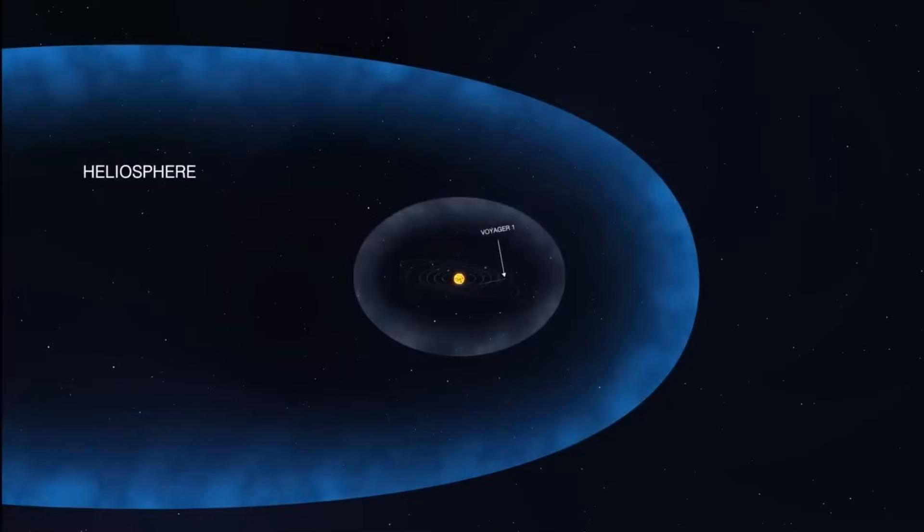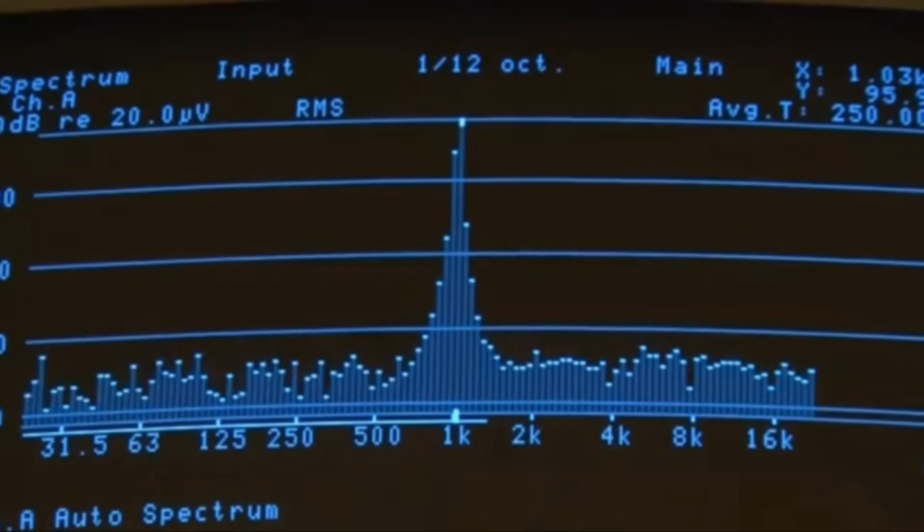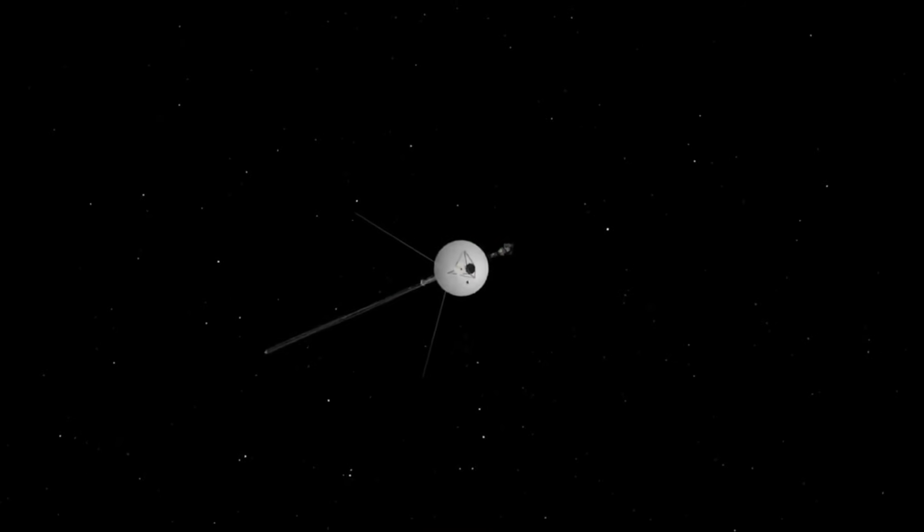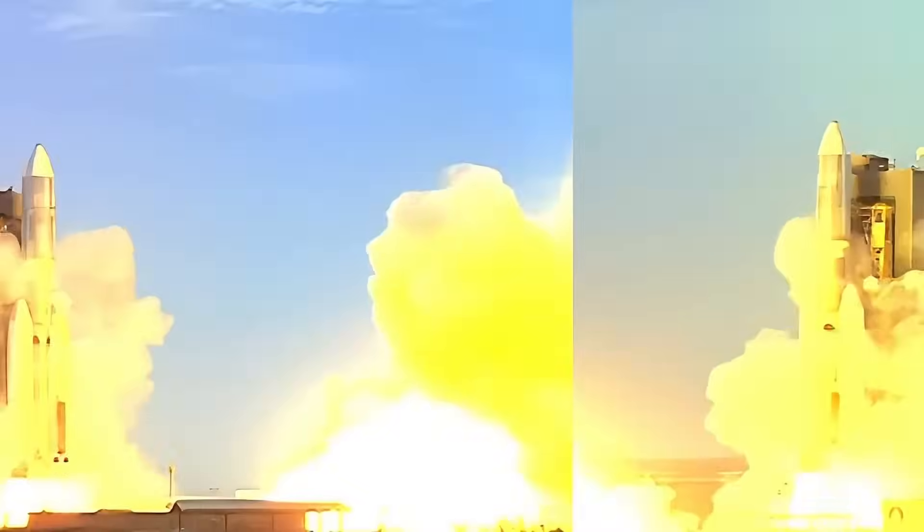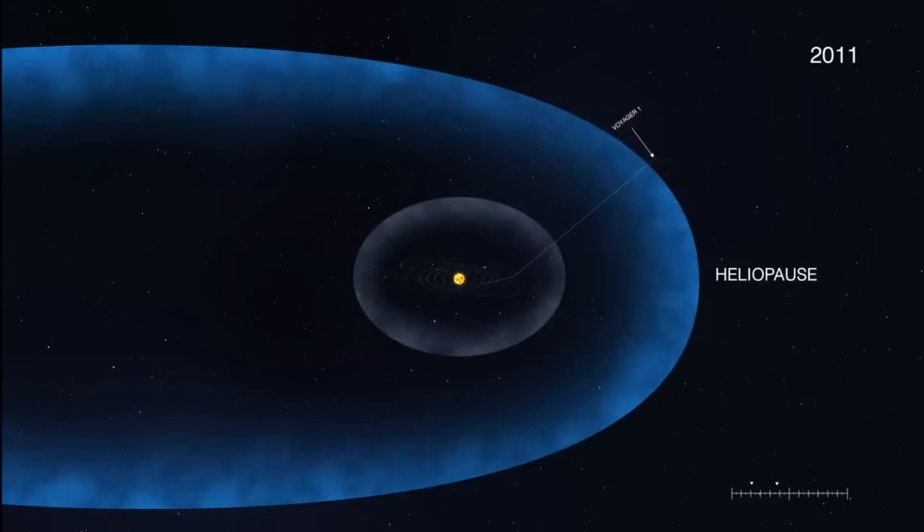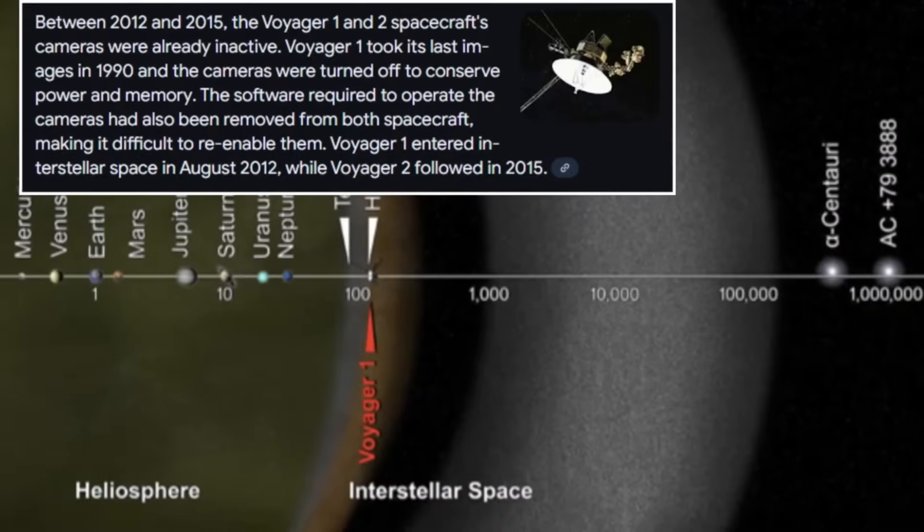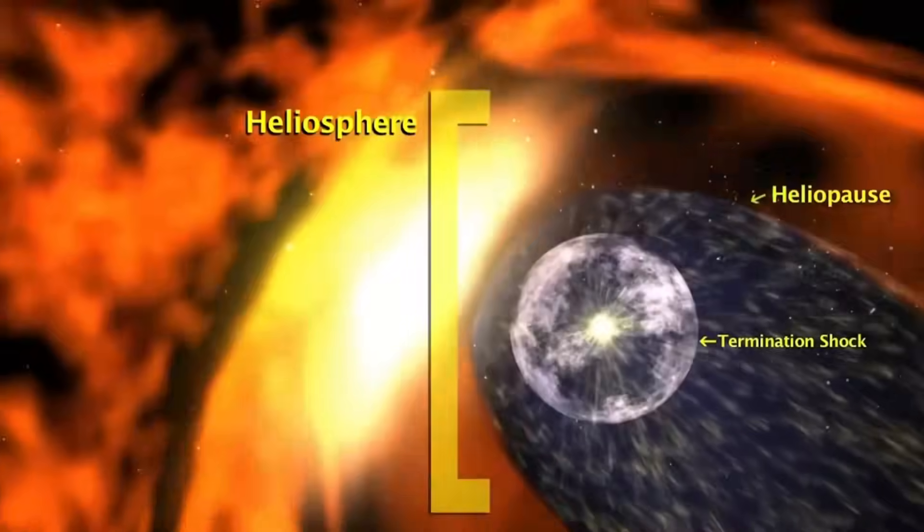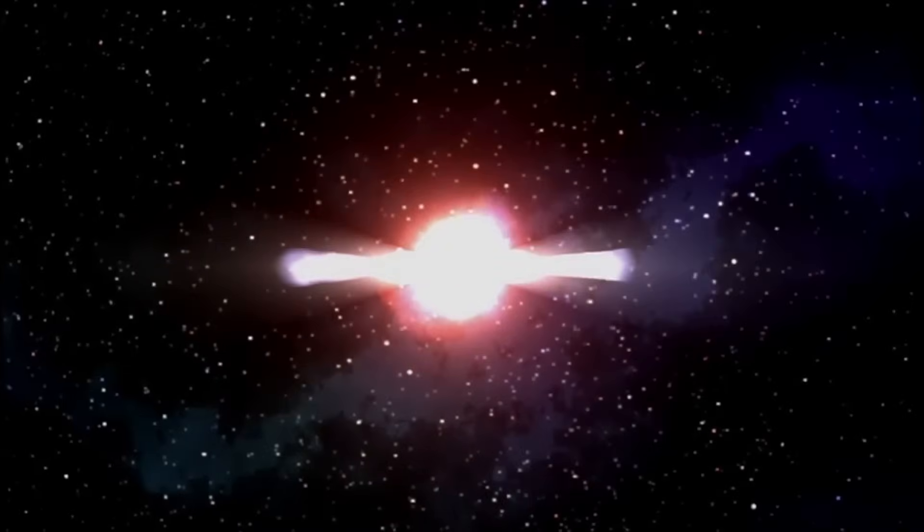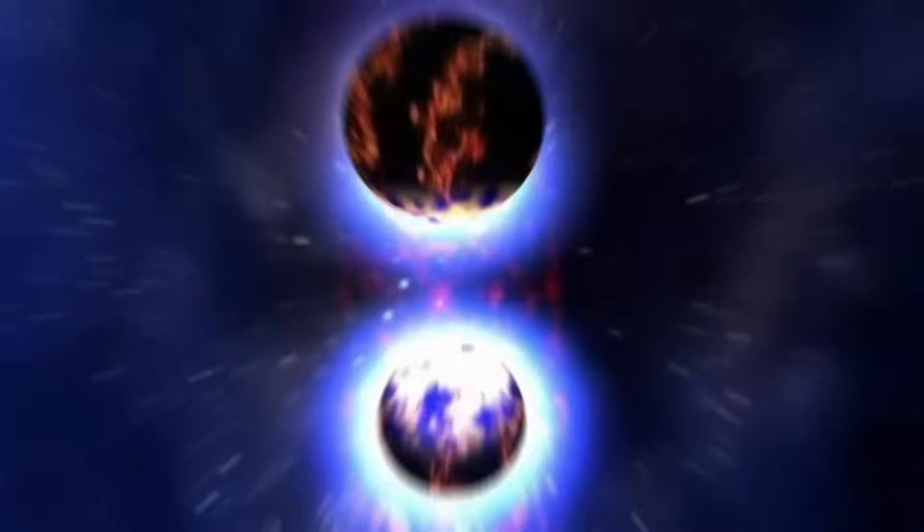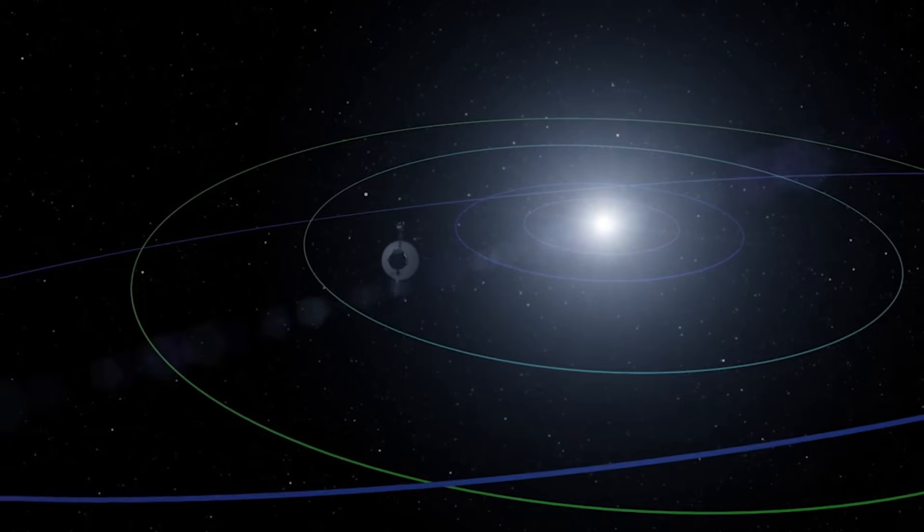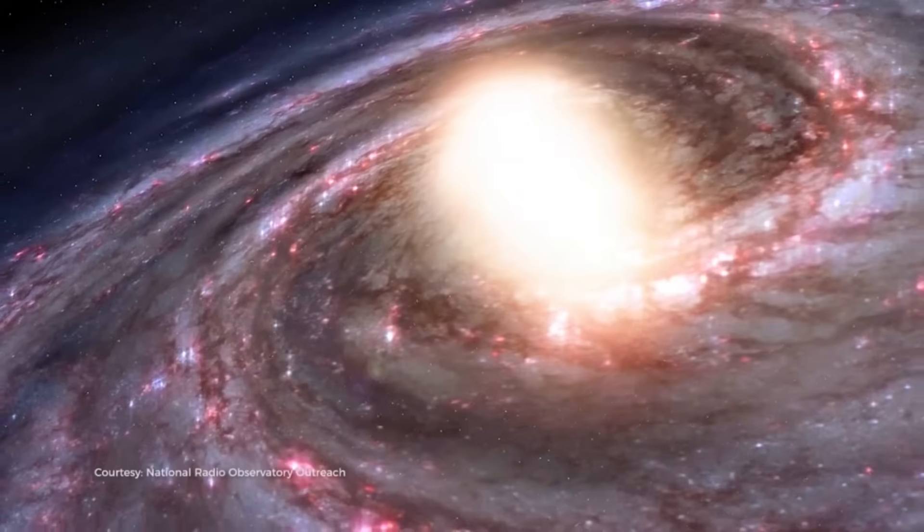Let's take a moment to understand the backdrop of this discovery. Voyager 1's journey is one of humankind's greatest achievements, a 40-plus-year odyssey that has pushed the boundaries of our understanding of space. As it left the heliosphere, Voyager 1 entered a realm where the influence of our Sun wanes and the interstellar medium takes over. This region is a chaotic mix of cosmic rays, magnetic fields, and interstellar particles, a place where conditions are wildly different from anything we experience on Earth.